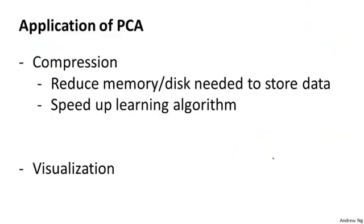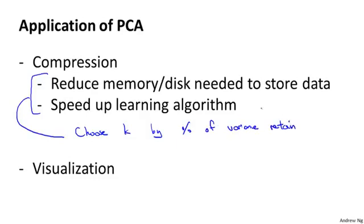To summarize, we've so far talked about the following applications of PCA. First is the compression application where we might do so to reduce the memory or the disk space needed to store data. And we just talked about how to use this to speed up a learning algorithm. In these applications, in order to choose K, often we'll do so according to figuring out what is the percentage of variance retained. For this learning algorithm speedup application, often we'll retain 99% of the variance. That would be a very typical choice for how to choose K.